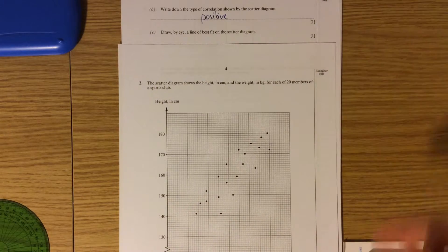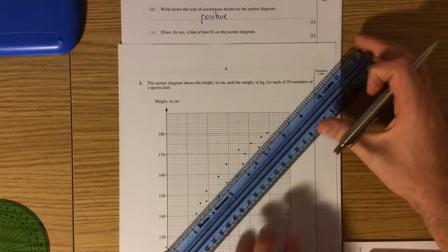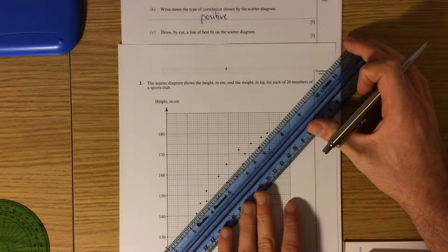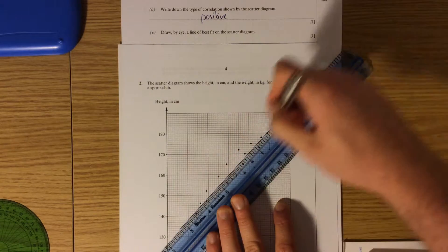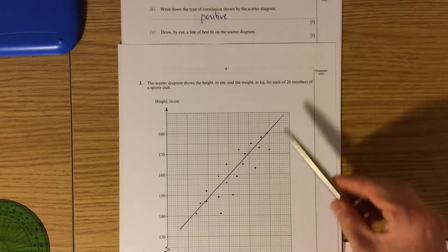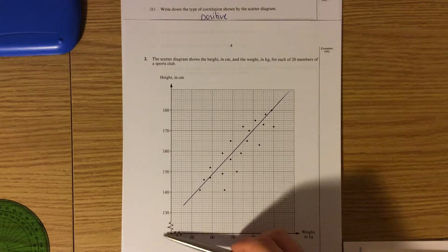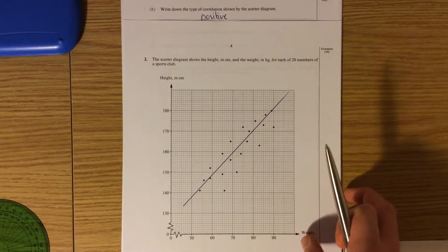Draw by eye a line of best fit on the scatter diagram. So by eye just means we don't find the mean. We need to get roughly half the points above the line and half the points below the line. It is not necessary that the line of best fit goes through the origin. It can stop wherever you feel necessary.